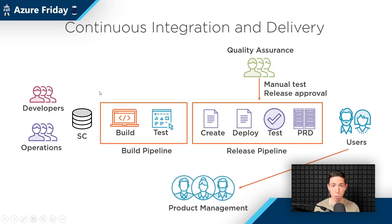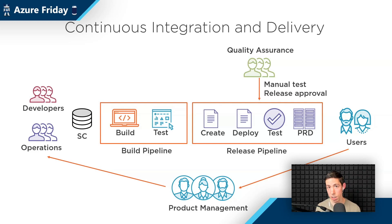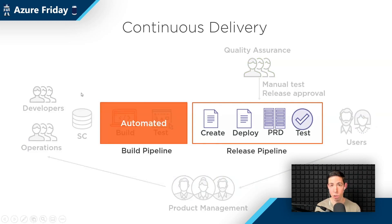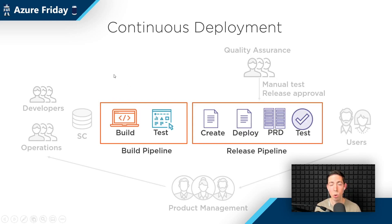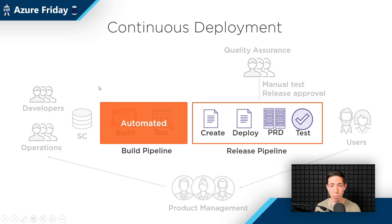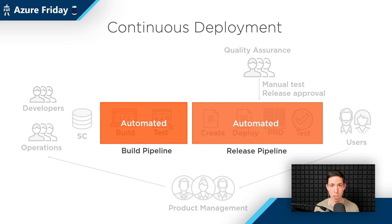Users tell product management what they think — maybe they report some bugs, have ideas, or want new features. Product management collects that information, creates requirements and stories for the teams, and so the cycle continues with continuous integration and continuous delivery. The build pipeline is automated and runs whenever you check in code. With continuous delivery, the release pipeline is on-demand — you press a button to release to production. With continuous deployment, which is slightly different, both pipelines are automated, meaning as soon as you check something into source control, it basically gets deployed all the way to production.